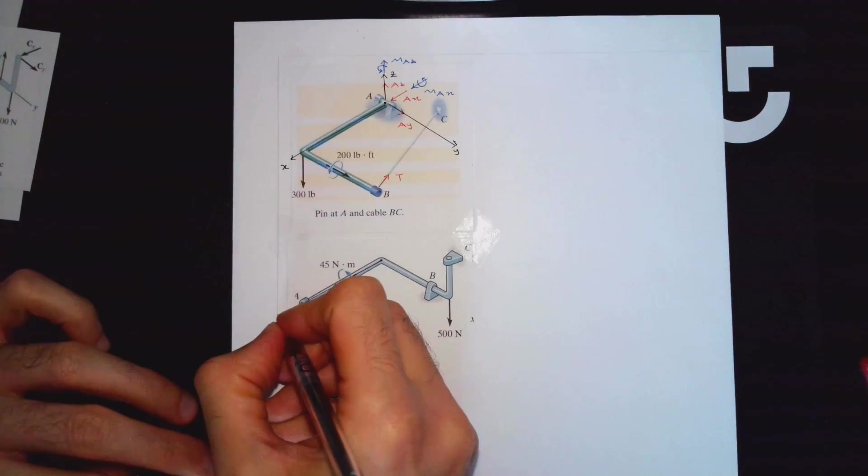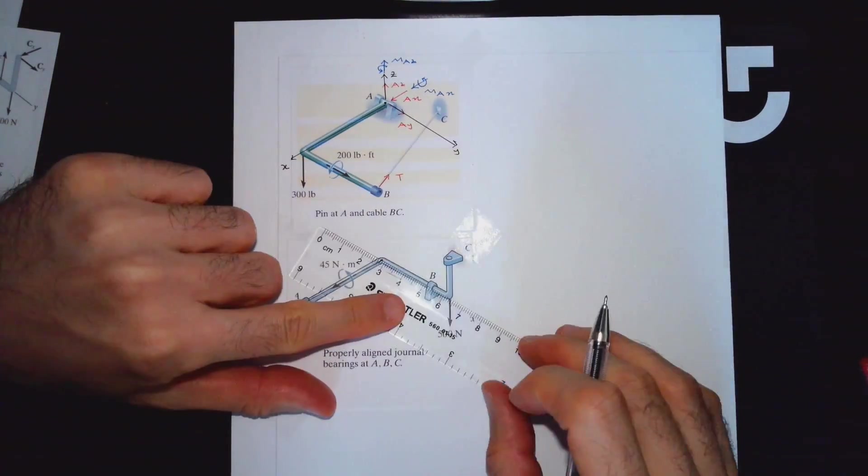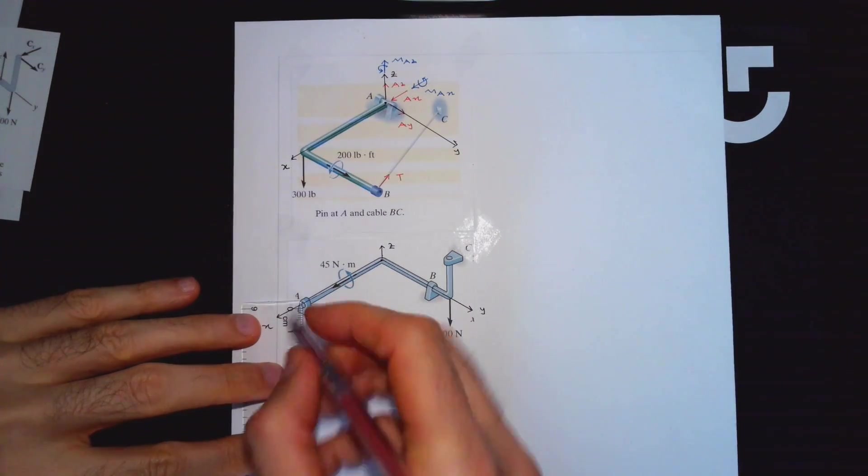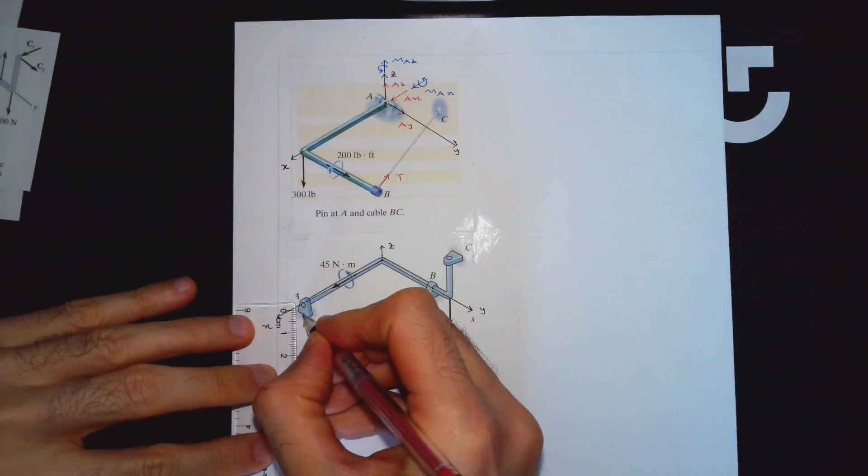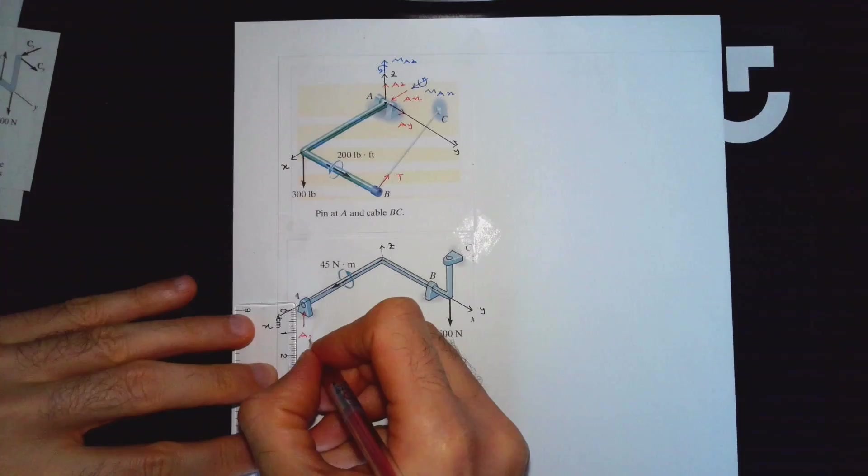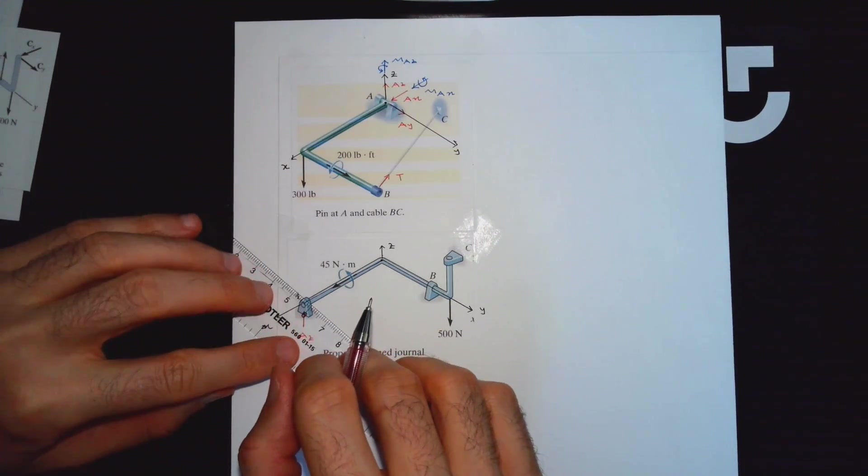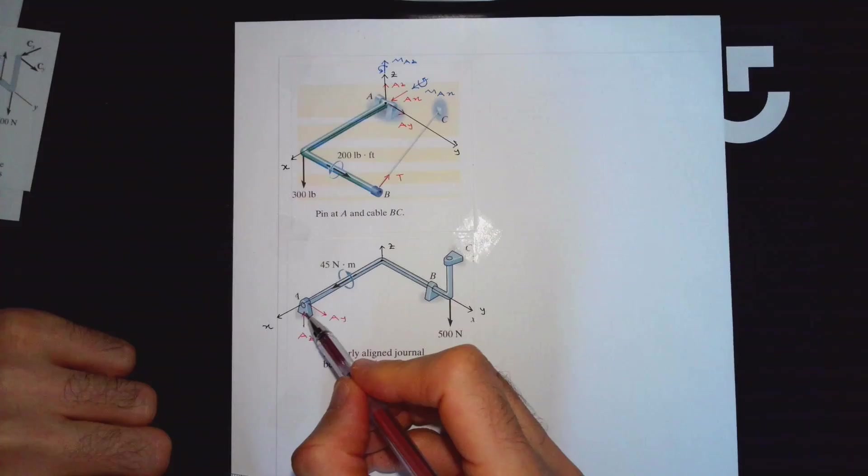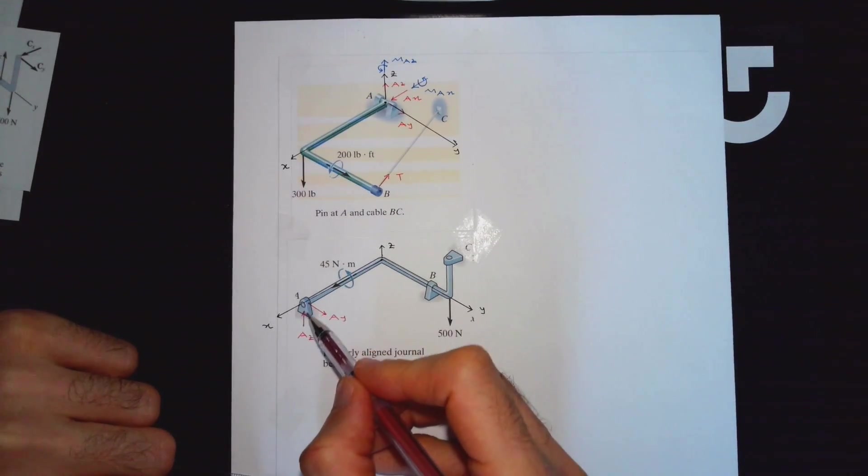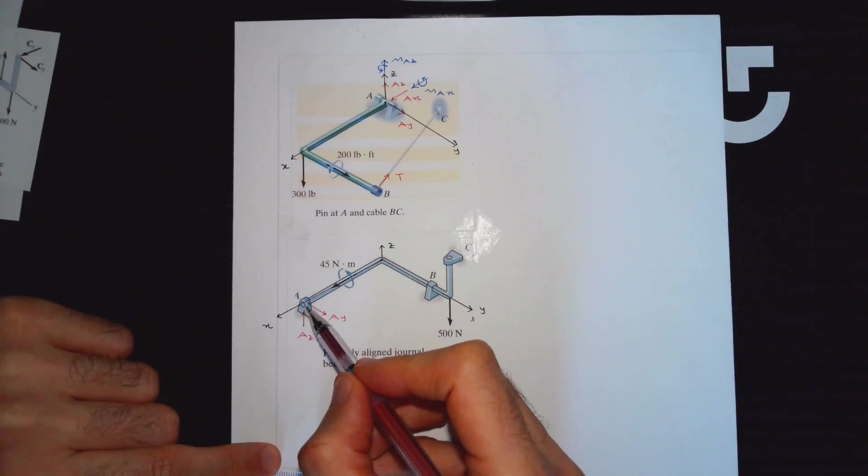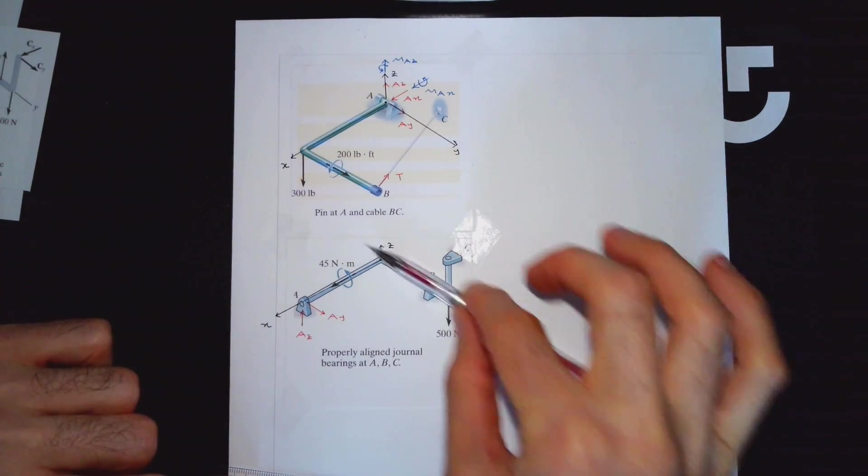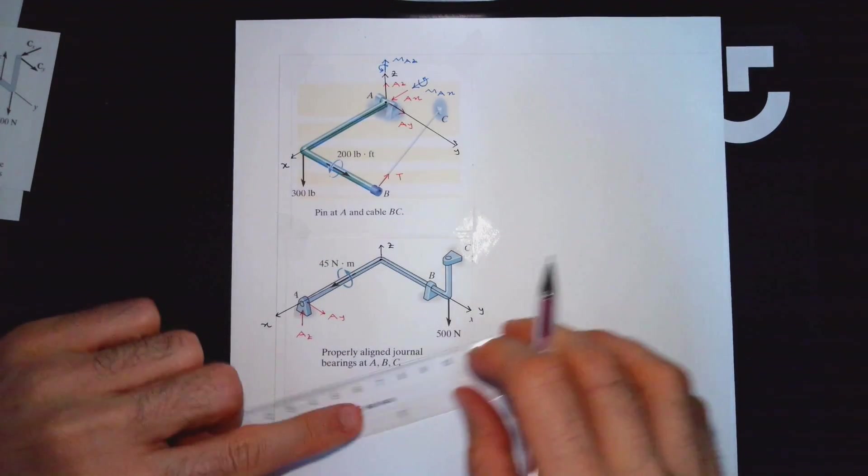We have three supports in terms of movements. This cannot move vertically, so this is AZ. It cannot move in Y direction, but it can move unless there is a special detail which is not obvious to us. We would assume that this can move in X direction. That's also through this height could move in that slot. We are not going to have any reaction there. The movement is prevented, this is BX. This can move vertically so I don't have any reaction there.